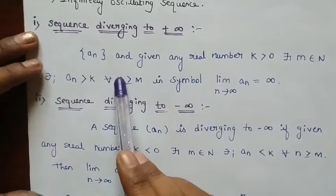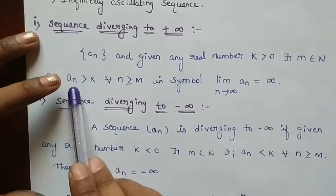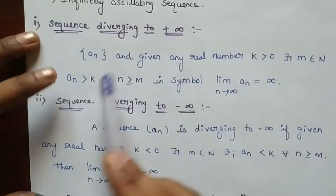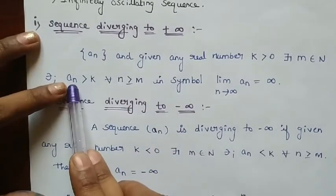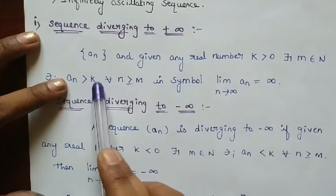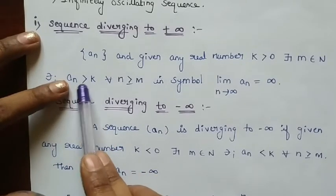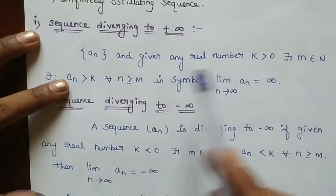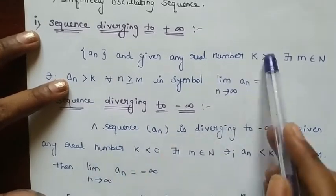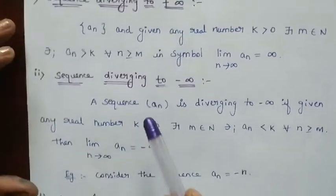This is an important condition. For a sequence diverging to plus infinity, the sequence will be bigger than our given real number K. That is AN greater than K and K greater than 0. These two conditions are important in sequence diverging to plus infinity.